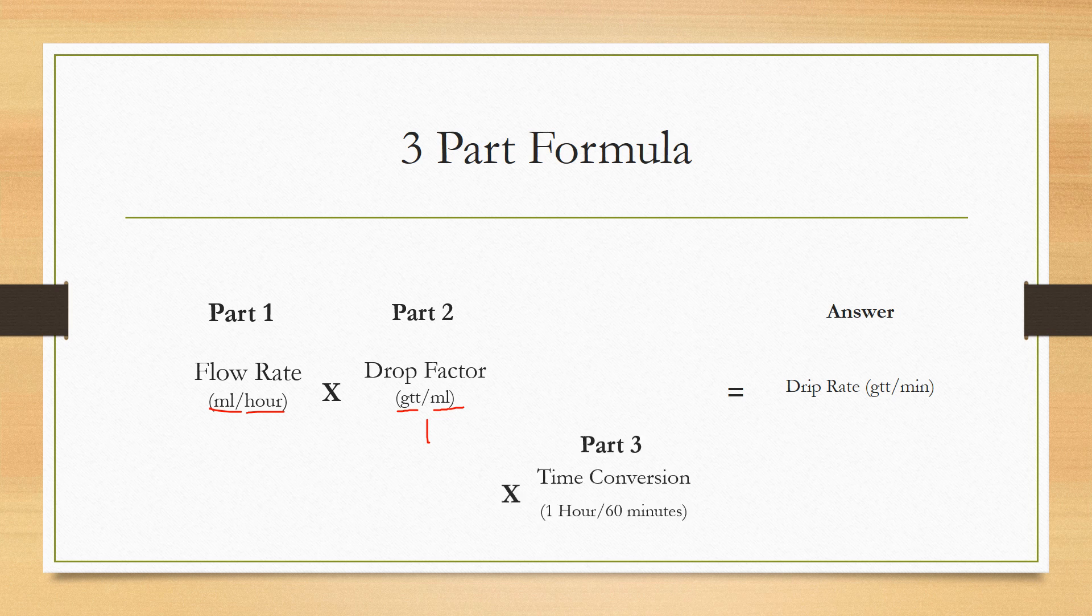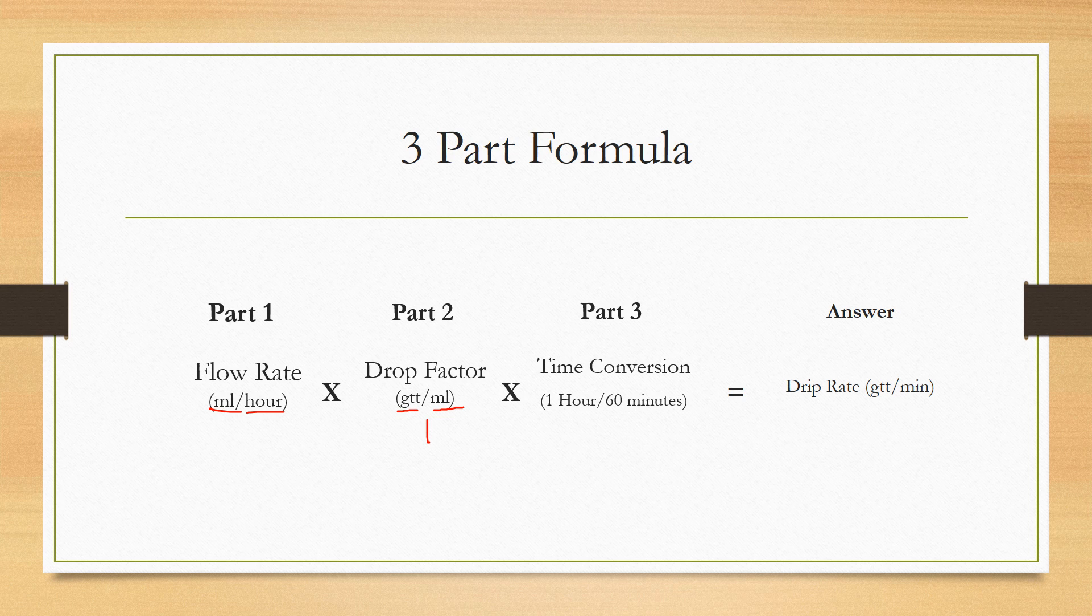You're going to take that and multiply it by part three, which is the time conversion. This is going to be one part that stays the same regardless of your drop factor and flow rate. So the time conversion, basically what it does is it cancels out units. You'll see in the next slide in the example.